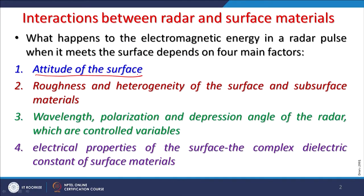The attitude and orientation of the surface — its slopes and direction — plays a very important role in power images or SAR images. The second factor is surface roughness. If a surface is very rough and heterogeneous, it will be recorded differently than a smooth surface. For example, a calm water body is recorded completely differently than one with many waves.